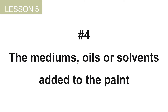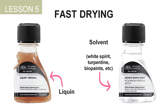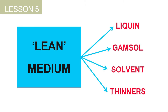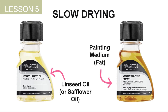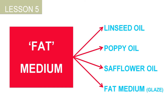The mediums, oils, and solvents you add to your oil paint will also affect its drying time. For example, if you use Liquin made by Winsor & Newton or solvents, your paint will dry faster than if you use just the paint as it is. Liquin is a lean medium, and solvents are too. But if you add oils like linseed oil, poppy oil, safflower oil, or a fat painting medium, the paint will dry much slower, as it makes the paint fatter and more oily.